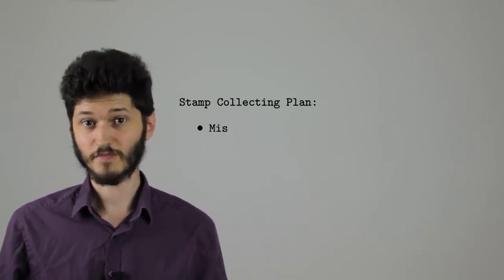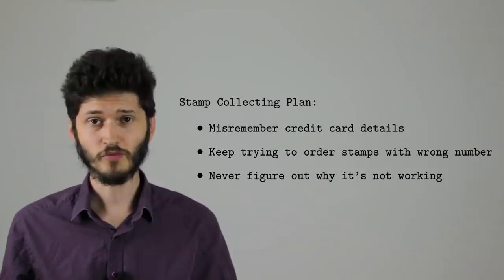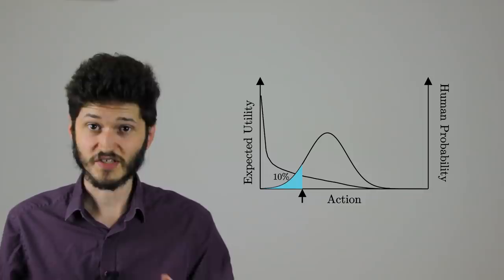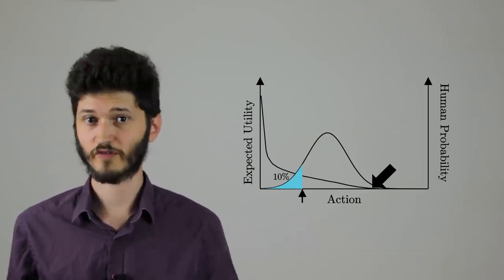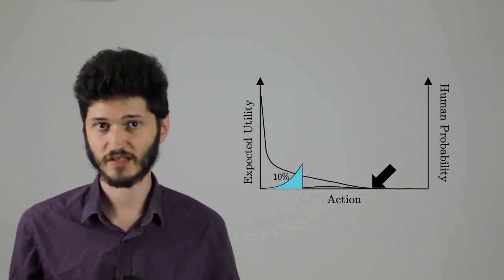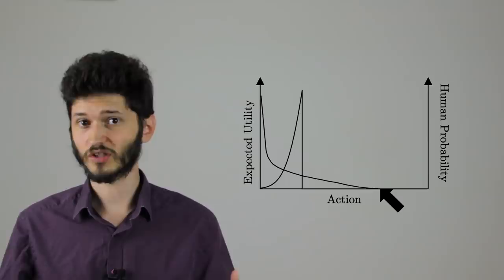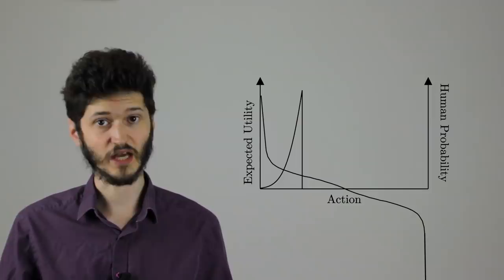So let's look at some different actions here and see how they do. Consider something like misremember your credit card details and keep trying to order stamps with the wrong number and you can't figure out why it's not working. A human is reasonably likely to do that. Not very likely, but we've all met people who... Point is, a pure human imitation might do that. But the expected utility maximizer can see that this results in very few stamps, so it ends up low on the list and doesn't make the 10% cutoff. So there are lots of mistakes that a human imitation might make that a quantalizer won't.